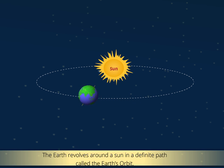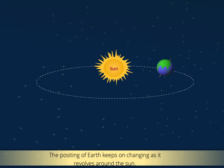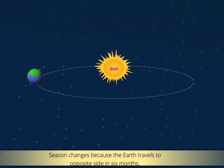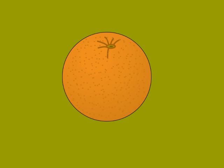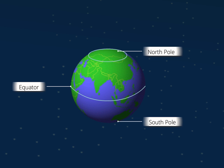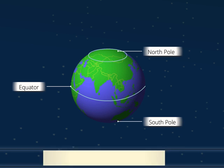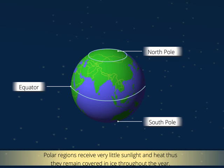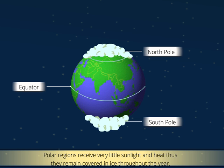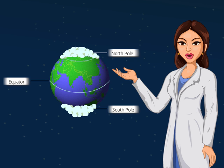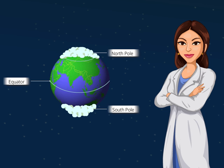The Earth revolves around the Sun on a definite path called the Earth's orbit. The position of the Earth keeps changing as it revolves around the Sun. The Earth travels to the opposite side in six months, which is why there is a change in seasons. The Earth is shaped like an orange. As we move up from the equator towards the poles, the sun rays become more and more slanted. Thus, the polar regions receive very little sunlight and heat and remain covered in ice throughout the year. This is how seasons change according to the movement of Earth.